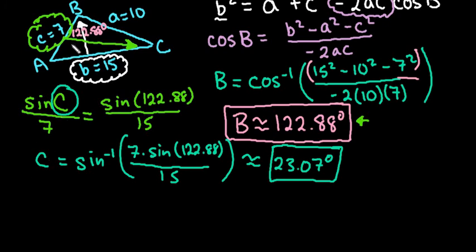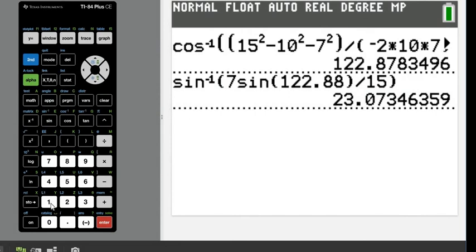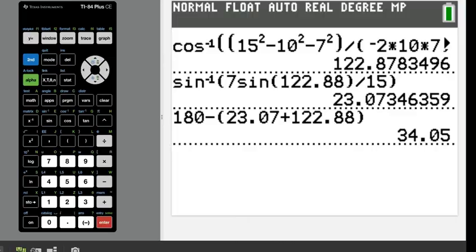And then our last angle to find, remember that all of the angles of a triangle add up to be 180 degrees. So to find our last angle, angle A, we would just do 180 minus the sum of 23.07 and 122.88. So if I plug this into my calculator, we end up with 34.05 degrees. So in case you needed me to show you that, we would just do 180 minus the sum of 23.07 and 122.88. And that's where the 34.05 came from.